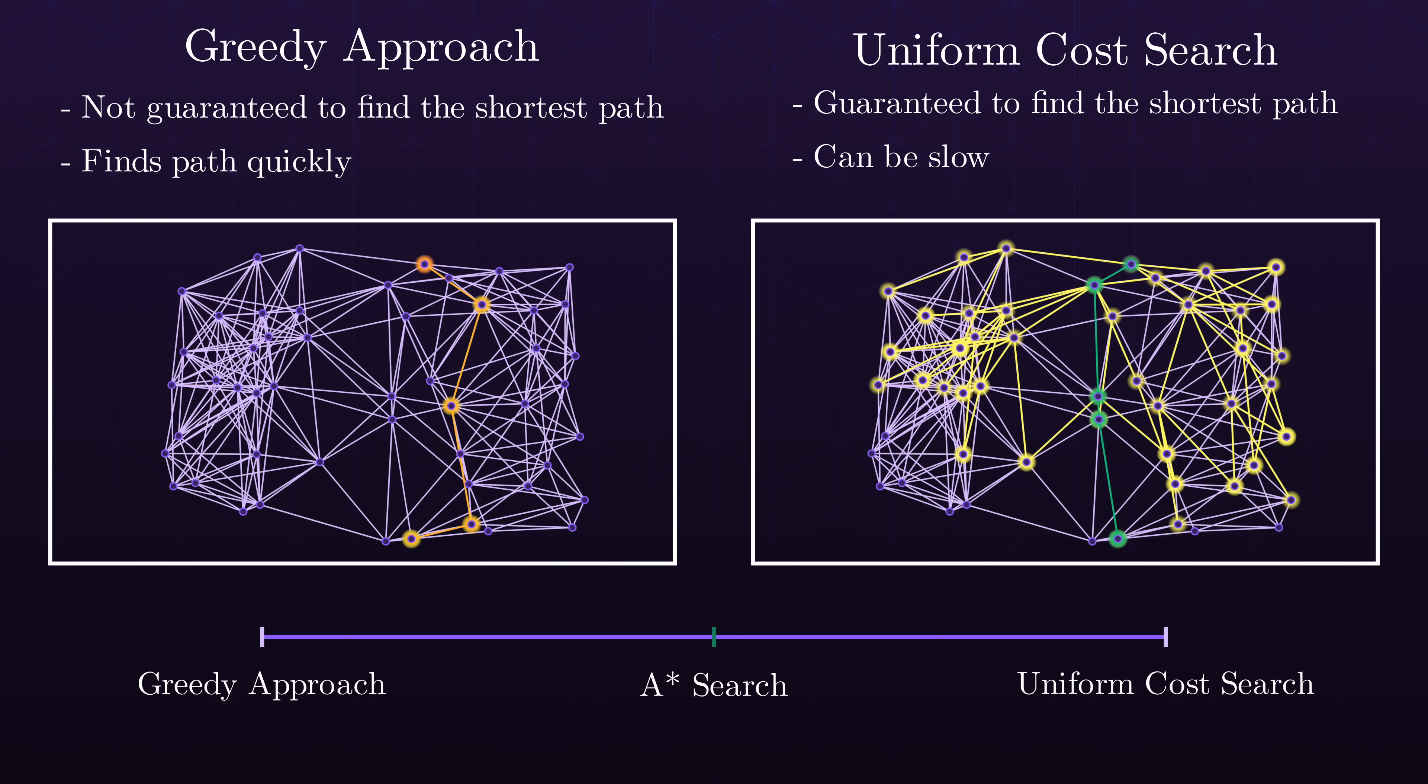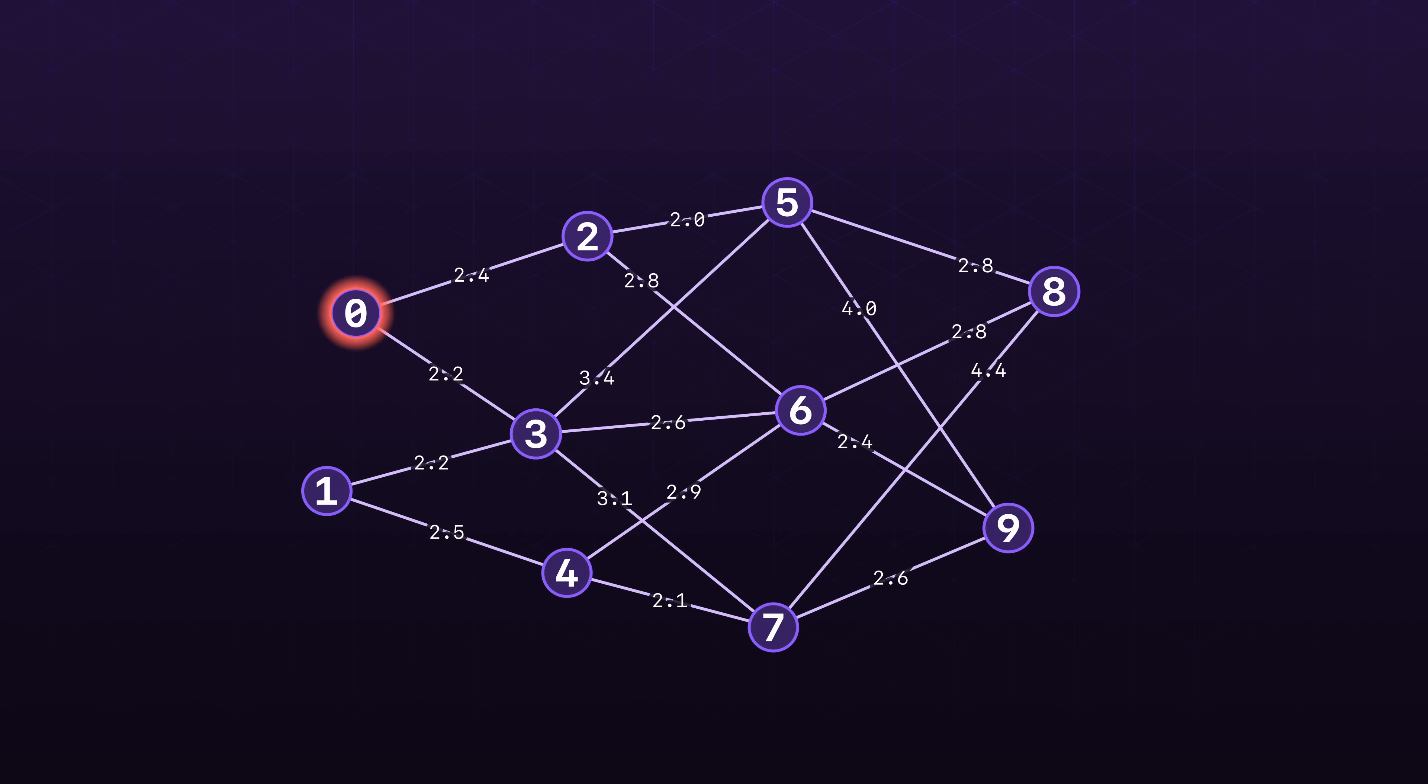To understand how this works, let's formalize the difference between the two algorithms. In uniform cost search, we add nodes to the priority queue based on the cost it took to arrive at the node. It turns out that greedy search is fundamentally the same type of algorithm with one key difference.